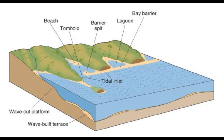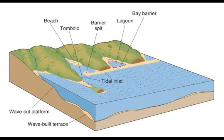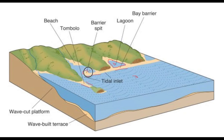Adding on to those deposition features, we have the tombolo, where we have sand and some vegetation around the area. We also have a lagoon, where calm water is formed off the main water body into the land due to deposition of sand. A barrier separates that calm water from the main water body. We also have the barrier spit formed by wave deposition.